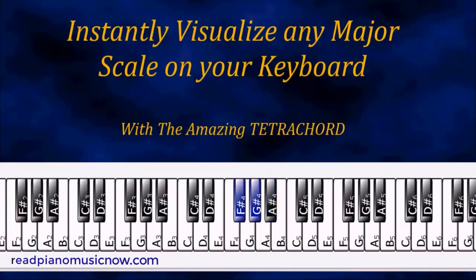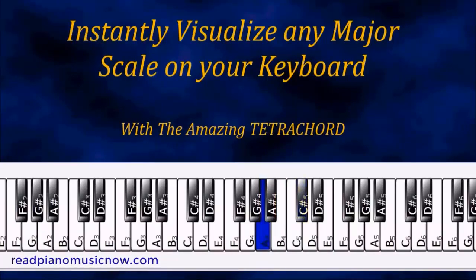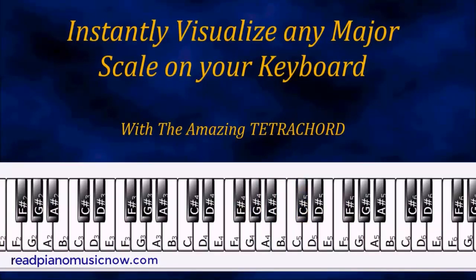Whole step, whole step, whole step — starting on A. Whole step, whole step, whole step. The last thing we need to add to visualize any major tetrachord is a half step on the top of it. Back to C — here's your top; that's a half step.